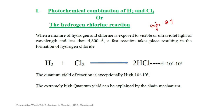When a mixture of H₂ and Cl₂ is exposed to visible or ultraviolet light of wavelength less than 4800 angstroms, a fast reaction takes place resulting in the formation of HCl. This reaction gives a quantum yield of 10⁴ to 10⁶, making it an example of high quantum yield.